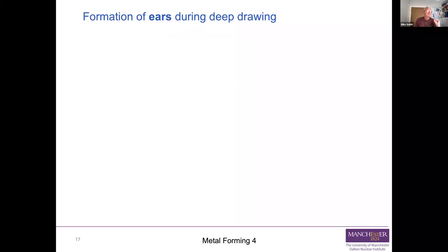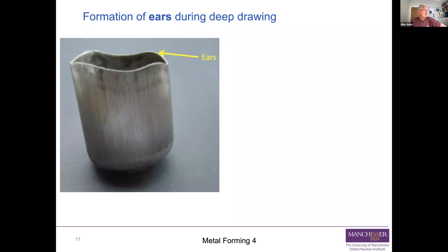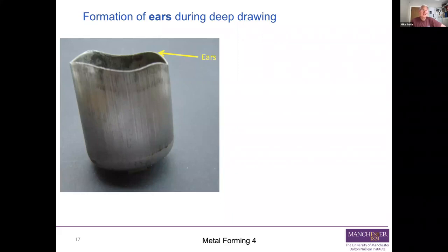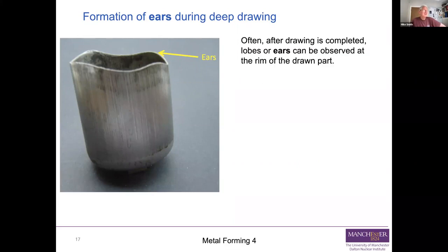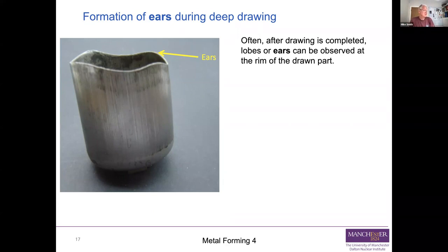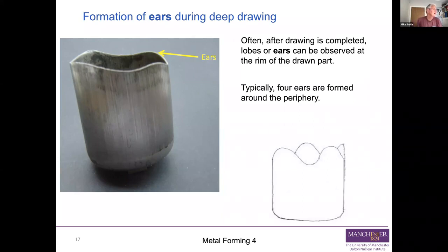We're now going to have a look at some things that can go wrong during deep drawing. The first defect is something called ears. When you draw a cylindrical cup, it's not got a nice flat top - it's got a wavy surface at the top, and we call those waves ears. This very often happens: when you finish drawing, you've got these lobes or ears at the rim of the drawn part. Typically you form four ears around the periphery.